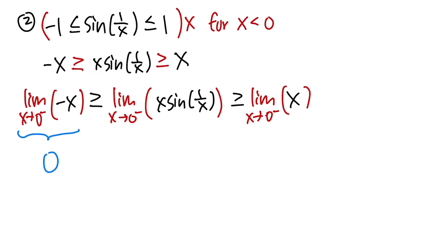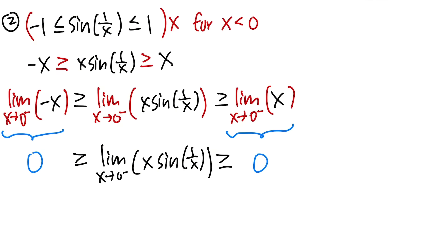This is 0, likewise, this is also clearly to be 0, and then maintain the inequality. And then the limit in between. So, as you can see, we can draw conclusion that the limit as x approaching 0 minus of x sine of 1 over x. This has to be equal to 0.